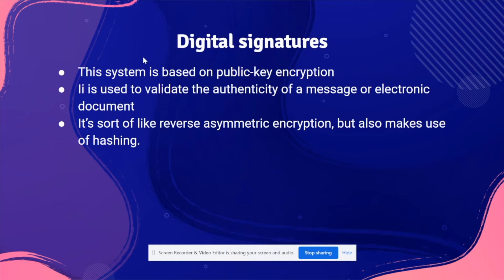Digital signatures are based on public key encryption and are used to validate the authenticity of a message or electronic document. It works by reversing asymmetric encryption and also makes use of hashing — your data is hashed and sent across the internet, and a database will check if the hash matches the encrypted hash in their database. If it matches, the data is authentic.